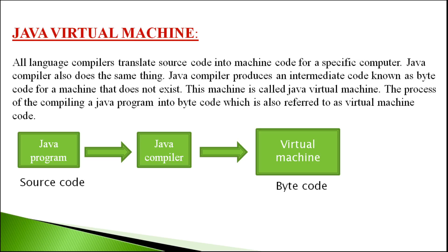In C programming language, we use the compiler to convert the source code into machine code. We use the compiler to convert the C program into machine code.